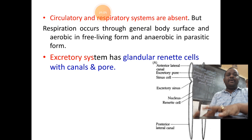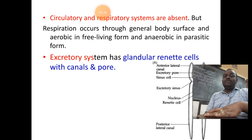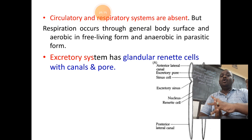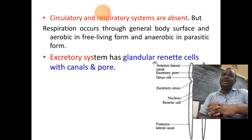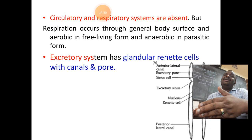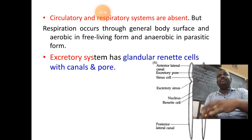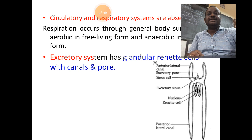Both circulatory and respiratory systems are absent in nematodes. Respiration occurs through the body surface by diffusion. Free-living forms respire aerobically using oxygen, while parasitic organisms respire anaerobically in the absence of oxygen.